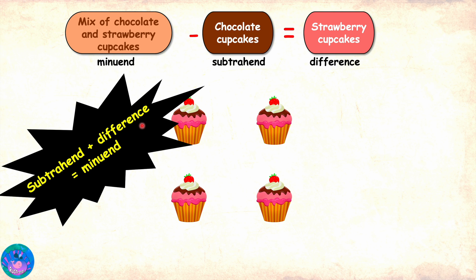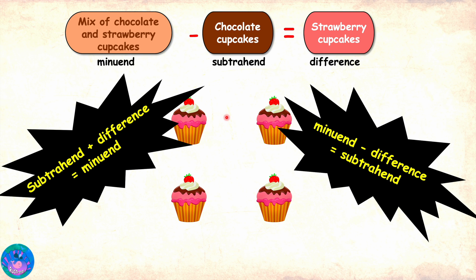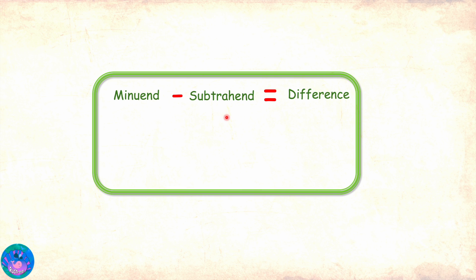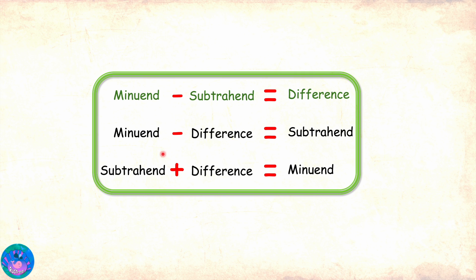Subtrahend plus difference equals minuend. Also remember that if we take away strawberry cupcakes from the mix, we get the chocolate cupcake. So minuend minus difference equals subtrahend. Very good Sam. So let us summarize this. We already know that minuend minus subtrahend equals difference. Now we also know that minuend minus difference equals subtrahend and subtrahend plus difference equals minuend. But how does knowing all this help me? What is the use of learning this?